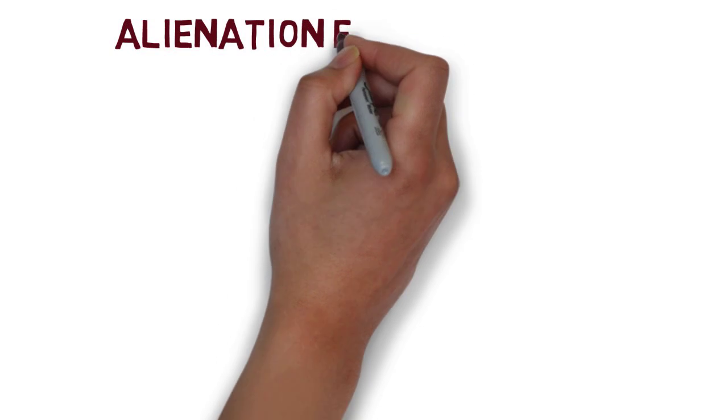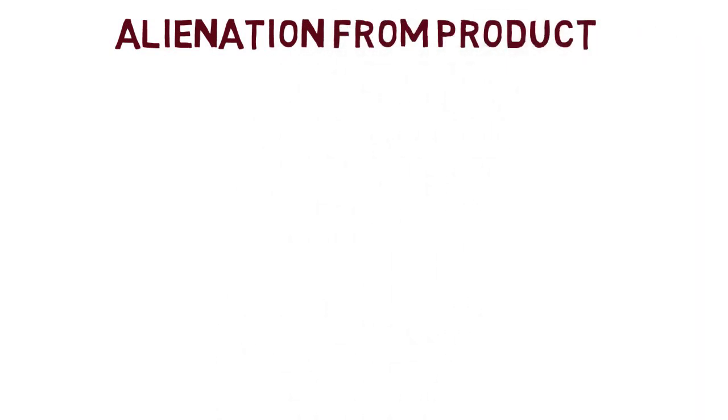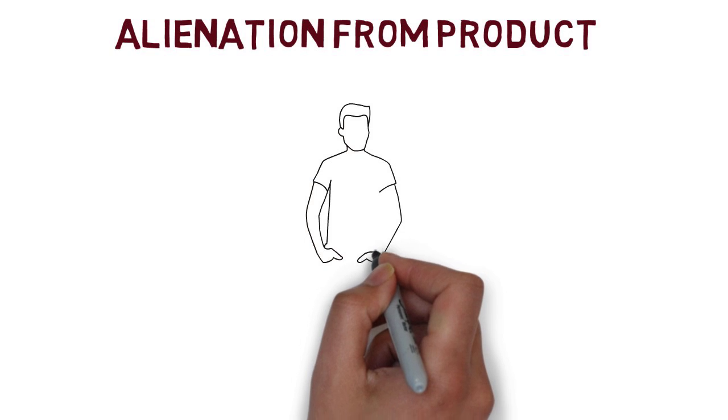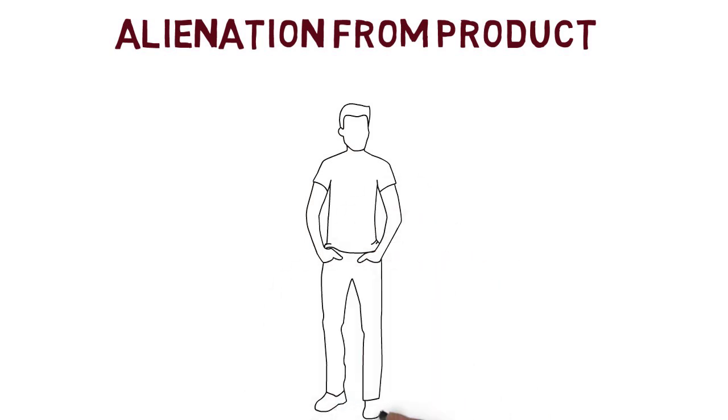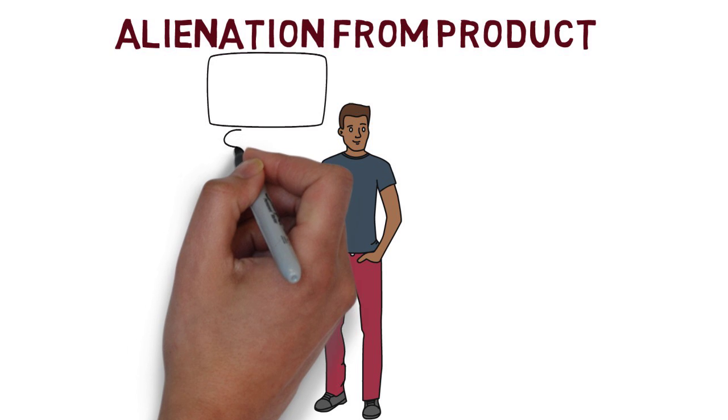The first is alienation from the product. In Marx's time, and in today's modern world, we engage in a lot of mass production. In our capitalist system, people are often placed in positions where they are responsible for making a small part of the product or engage in a very specific job.